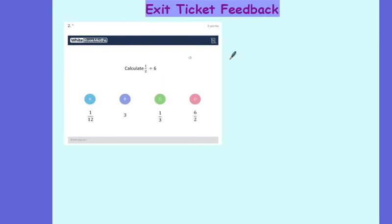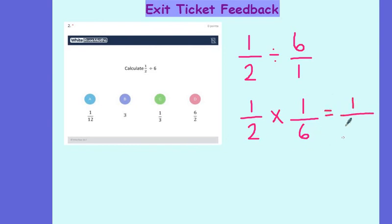For the second question I asked you to calculate what a half divided by 6 was. Again, I'm dealing with fractions so I'm going to write the 6 as 6 over 1. This one was a little bit easier. I keep my first fraction, I flip my second fraction and I change my sign. 1 times 1 gives me 1 on the top, 2 times 6 gives me 12 on the bottom. So the correct answer was A.